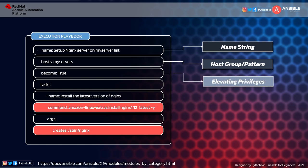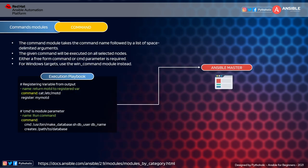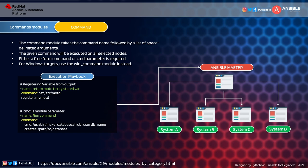The third element is 'become: true', used for elevating privileges — you can use become as true or yes. The fourth is 'tasks', where we define our tasks. After that we have the Ansible module, which is 'command'. The command module helps you execute commands on the shell prompt or Windows shell. It takes a task keyword as its arguments, along with a parameter like 'creates' and the path string.